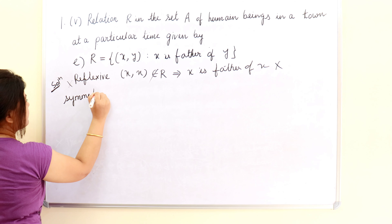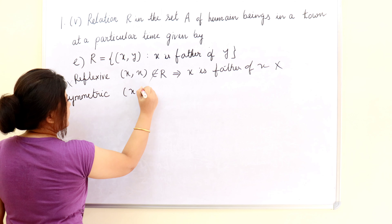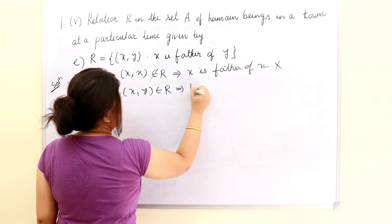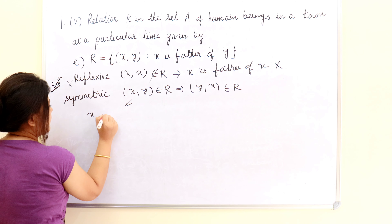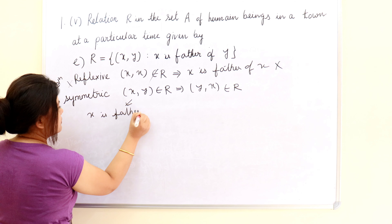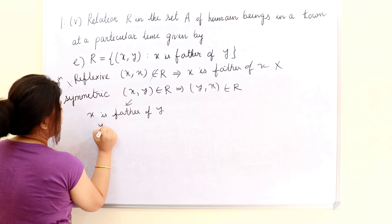Then symmetric. The condition for symmetric is: (X,Y) belongs to R, then (Y,X) should belong to R. (X,Y) belongs to R means X is father of Y, which means Y is the son of X. But (Y,X) belongs to R would mean Y is father of X. Practically this is not possible — after X being the father of Y, Y cannot be the father of X. That's why again this is not symmetric.